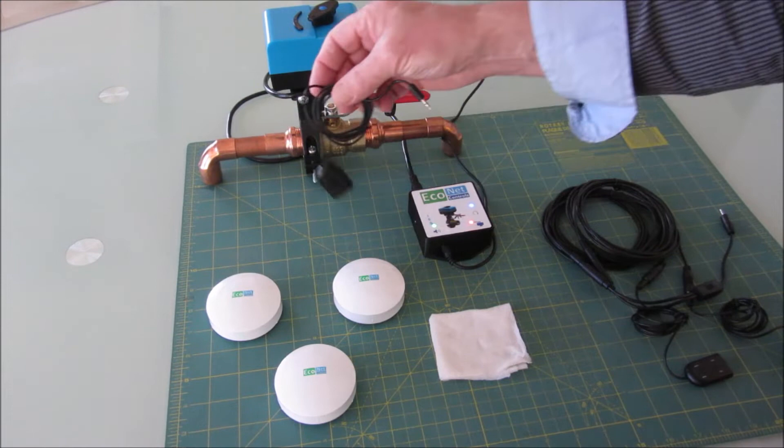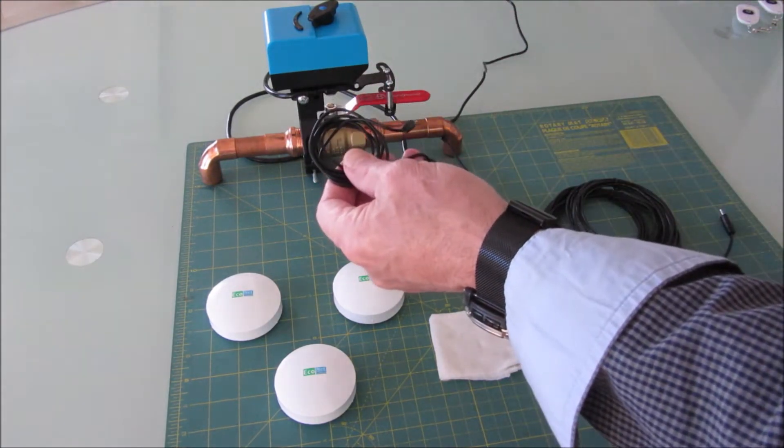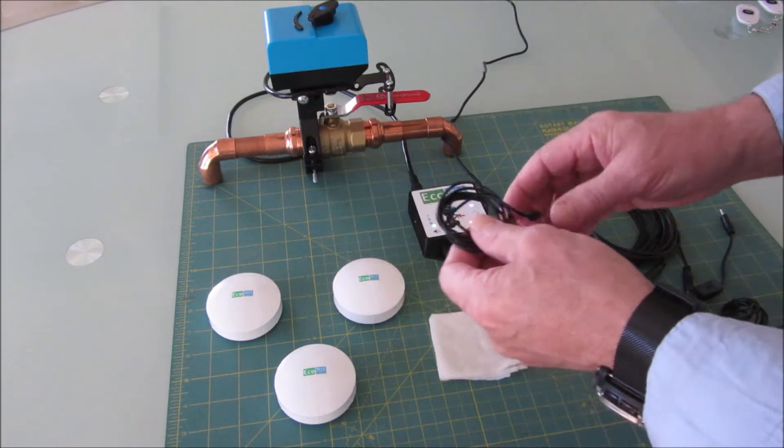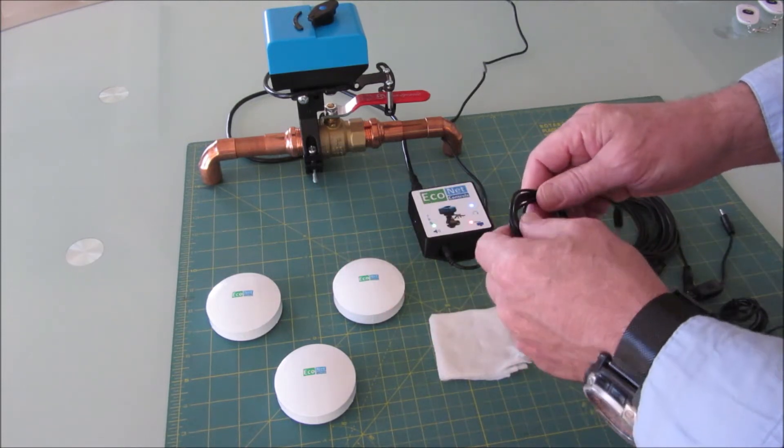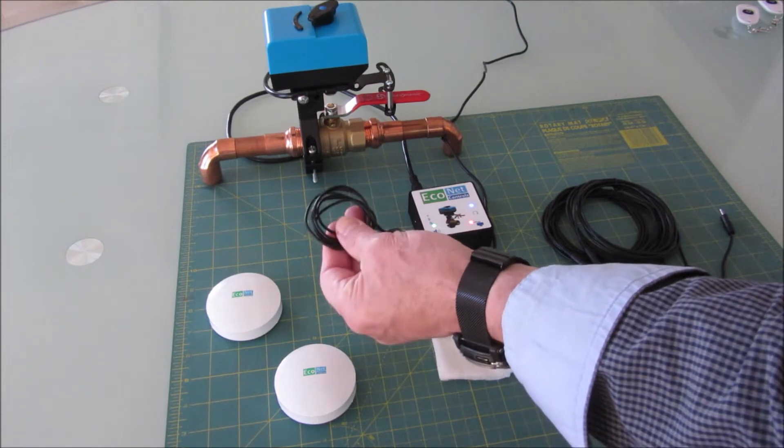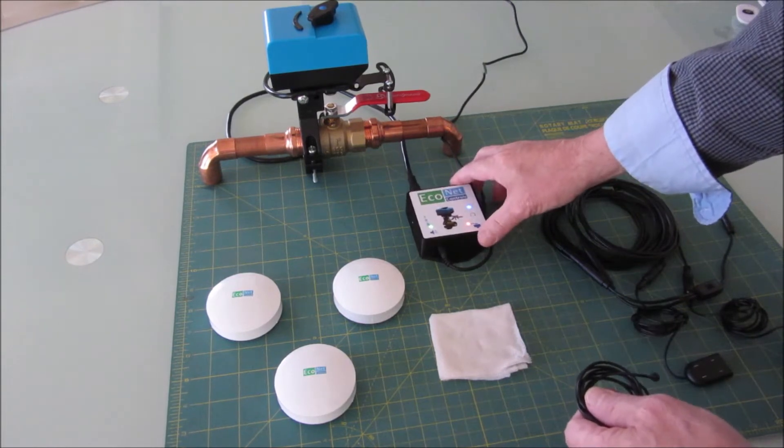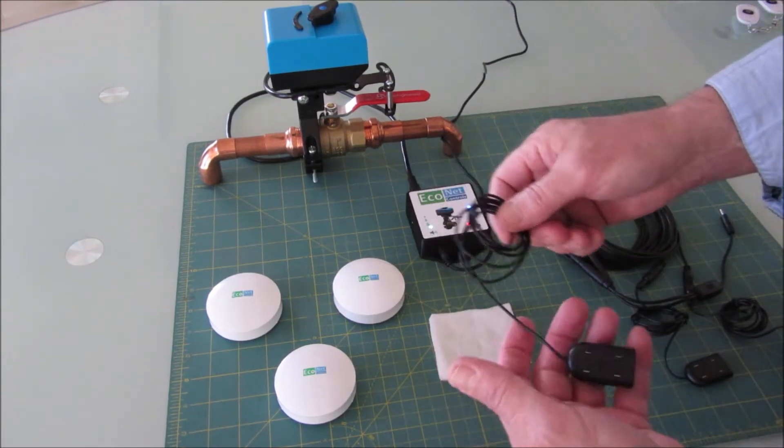So the wired leak sensor is just a good way to add a low cost leak sensor and it gives you a little bit more security close to the valve. This is about a meter long, this cable, and you would just hang this on the wall close to the valve, plug this in and hang this on the floor.